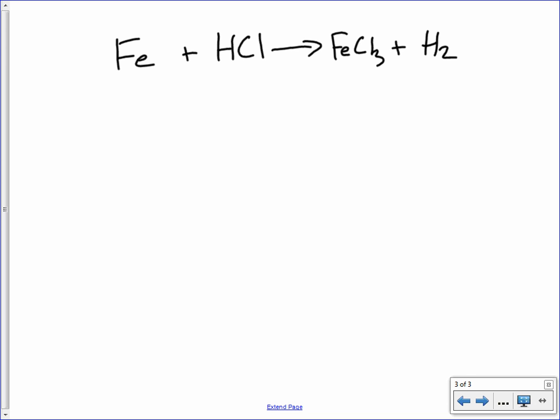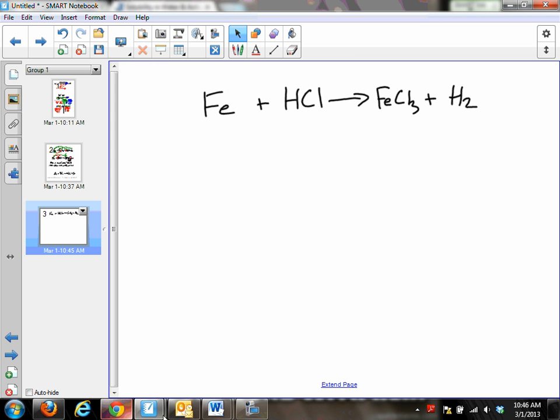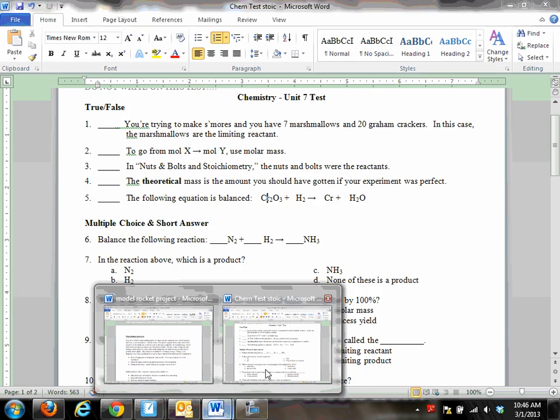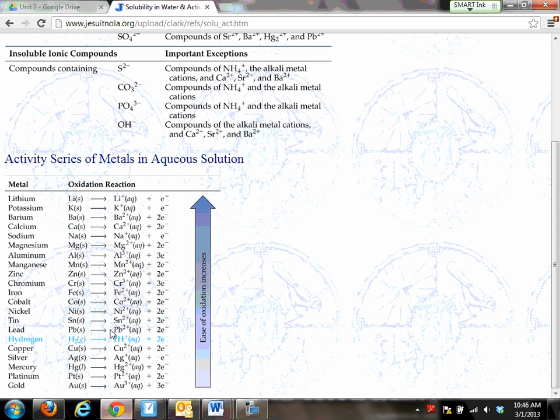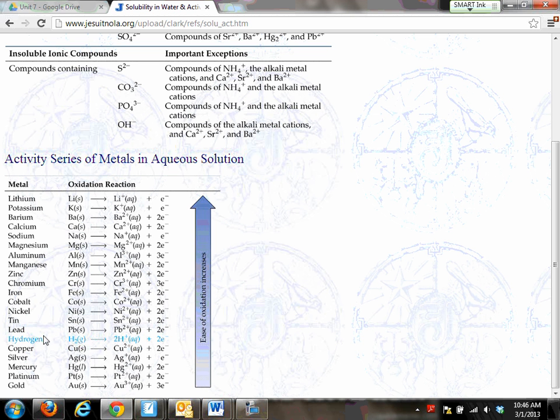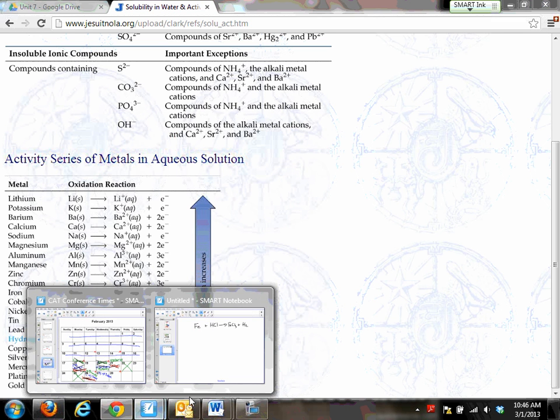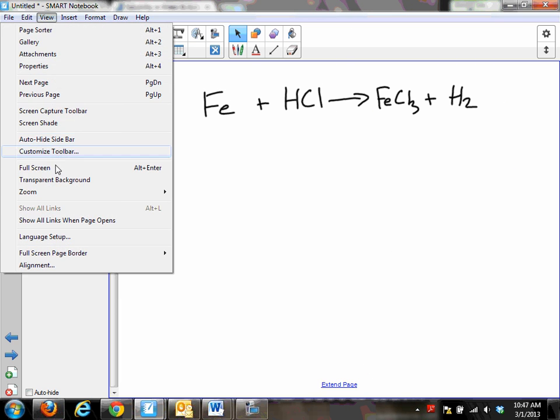Now, for this to happen, iron has to be higher on the activity series than is hydrogen. So, let's go look at that chart we just found and make sure that is the case. So, here is iron right here. And here is hydrogen. So, it indeed is higher. Thus, it will replace it in this compound. So, it's going to happen, basically.